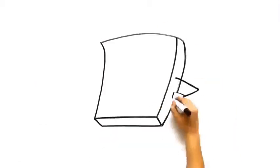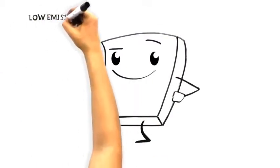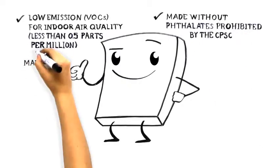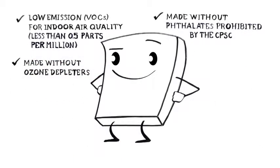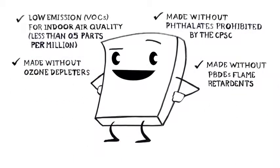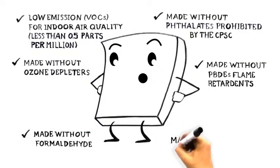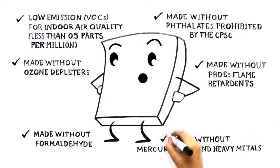CertiPUR-US approved foams are low in VOC emissions for indoor air quality, made without prohibited phthalates, made without ozone depletors, made without PBDE flame retardants, made without formaldehyde, and made without mercury, lead, and heavy metals.